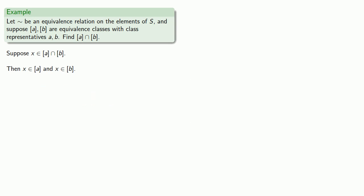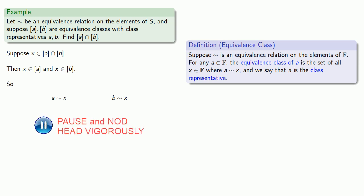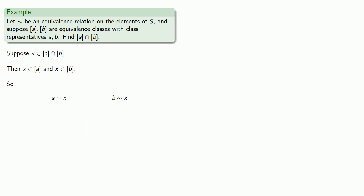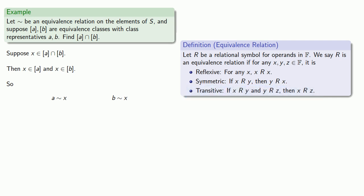Since x is in each equivalence class, we know that A squiggle x and also B squiggle x. Because squiggle is an equivalence relation, we know that it's reflexive, symmetric, and transitive. With three terms A, x, and B, transitivity seems relevant — except we're not quite in the right form, since the second term of one relation has to be the first term of the other. But our relation is symmetric, and since B squiggle x, we can reverse it to get x squiggle B.